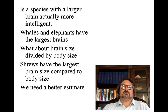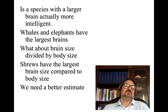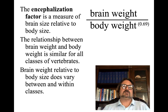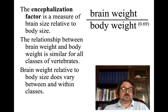Does a larger brain translate to more intelligence? Whales and elephants have the largest brains — but is an elephant smarter than Bill Gates? What about brain size divided by body size? Shrews have the largest brain-to-body size ratio, but you never hear of shrews inventing Silicon Valley startups. We need a better estimate — the encephalization factor — a measure of brain size relative to body size. The formula has brain weight in the numerator and body weight to the 0.69 power in the denominator. The relationship between brain and body weight is similar for all classes of vertebrates, but brain weight relative to body size does vary between and within classes.